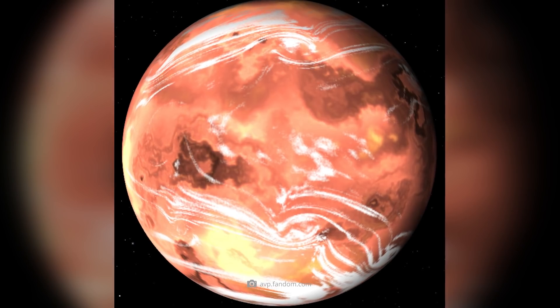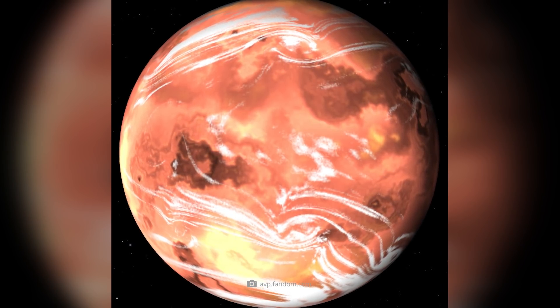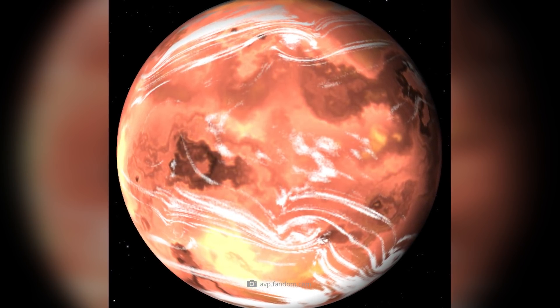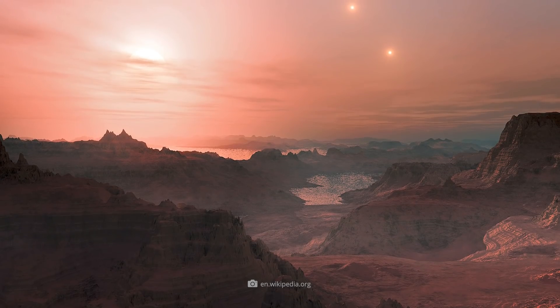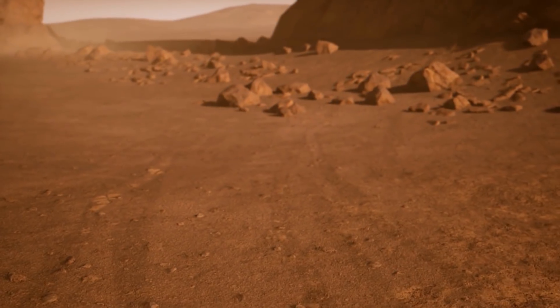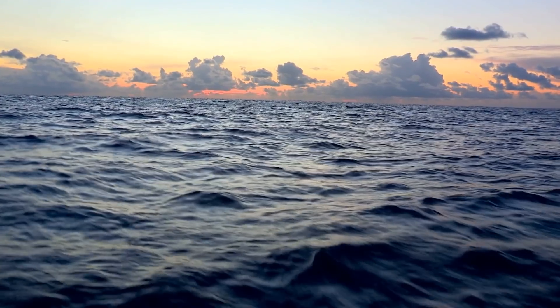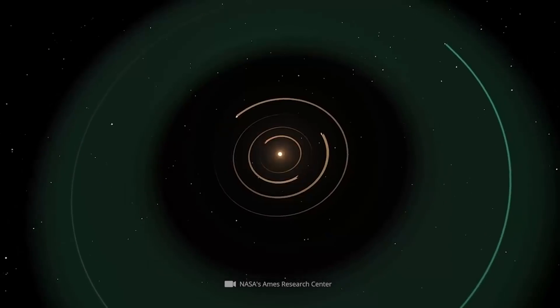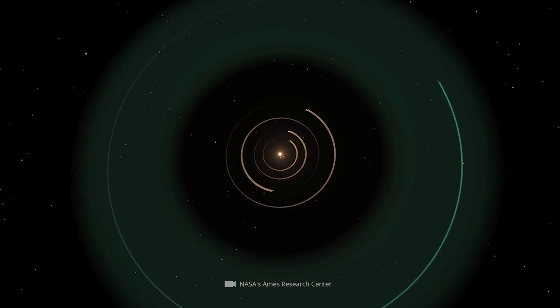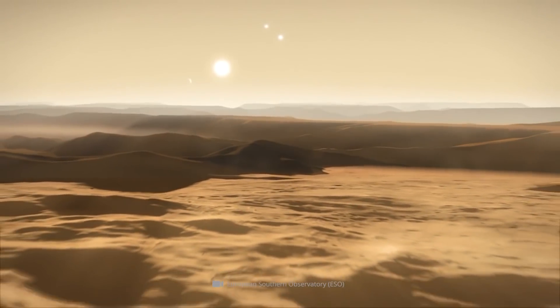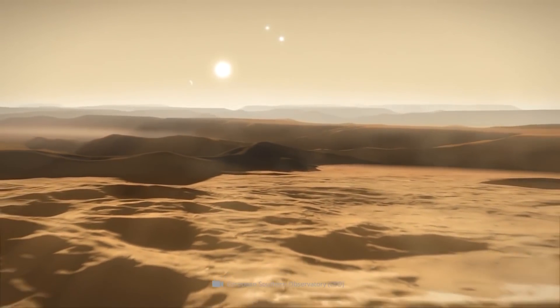Gliese 667Cc. The planet named Gliese 667Cc is only 22 light-years away from us. This makes the rocky planet one of the closest candidates. It's quite possible that the planet is a solid rock planet with an atmosphere and water. It orbits its star in the so-called habitable zone. Thus, the conditions for sufficient light and warmth would be present in any case.